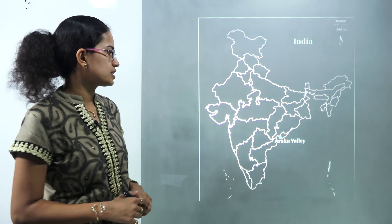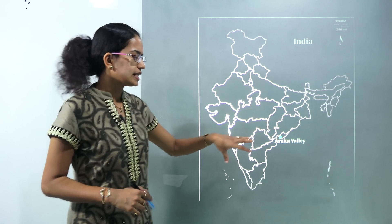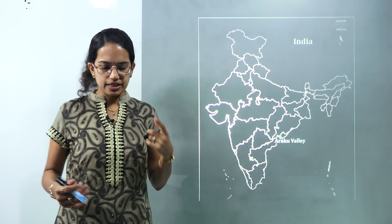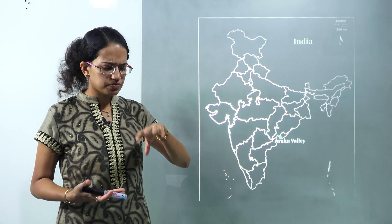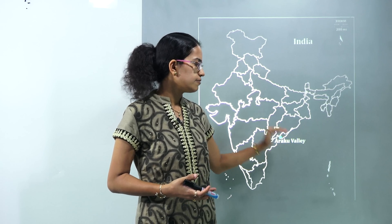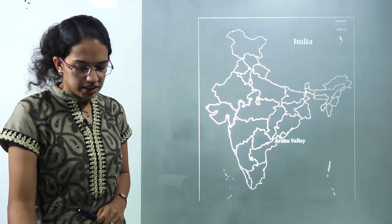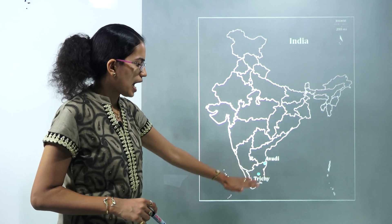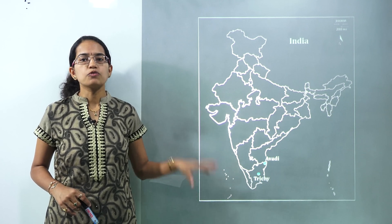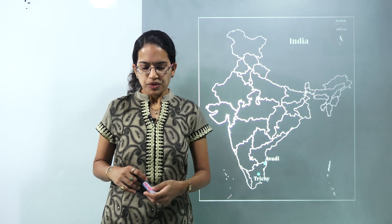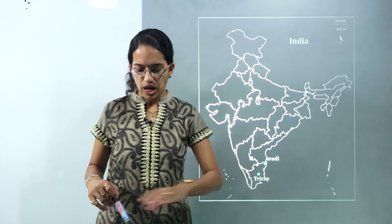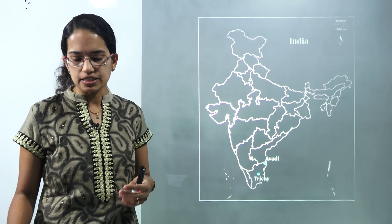Araku Valley is a well-known coffee production centre, famous for its geotagging of coffee, located in the Visakhapatnam district of Andhra Pradesh. Next, Avadi and Tiruchi, both in Tamil Nadu, are known for modernization of ordnance factories. Avadi has the Heavy Vehicle Factory and Tiruchi has the Heavy Alloys Penetrator Project.